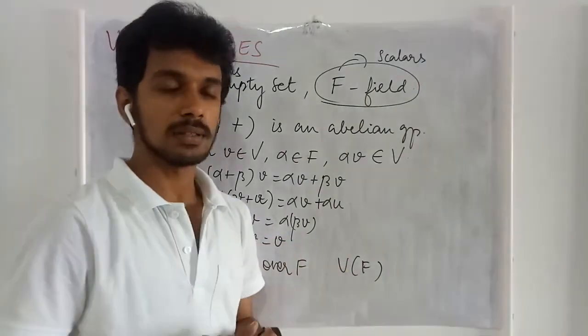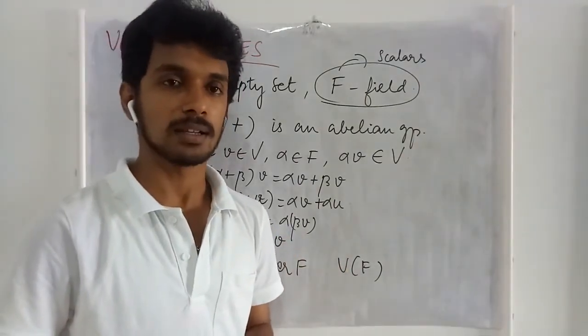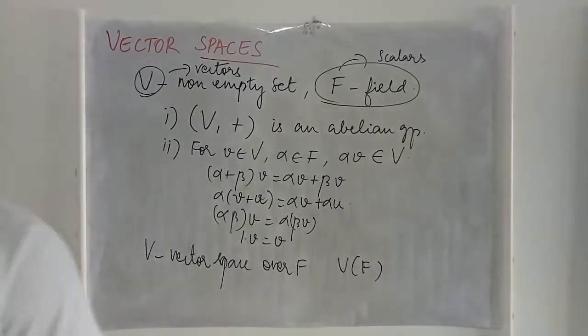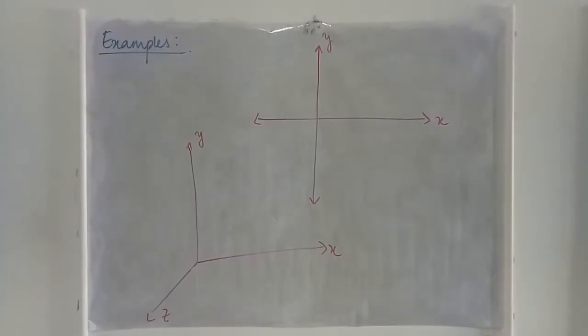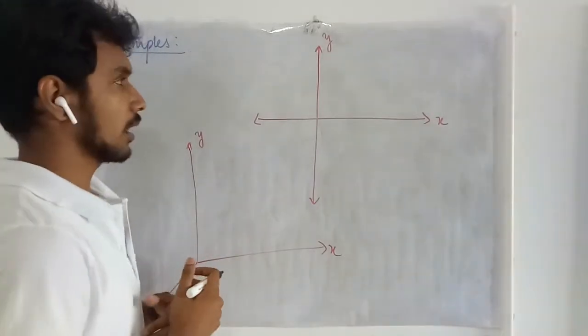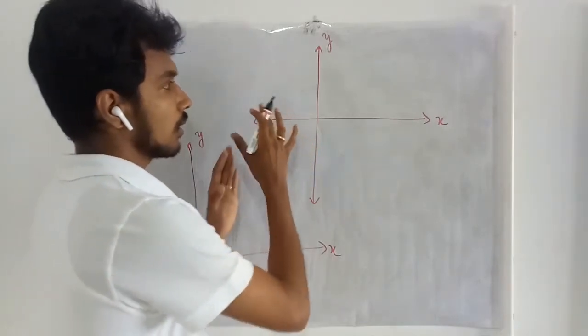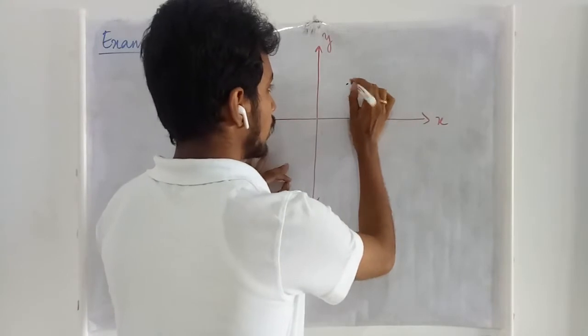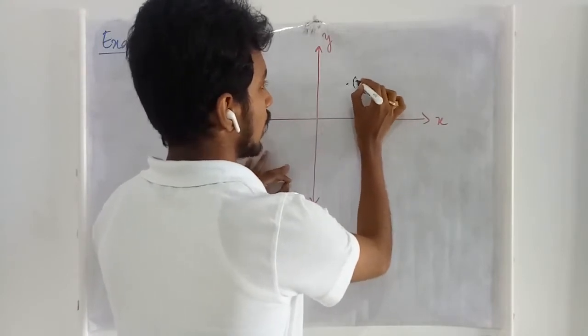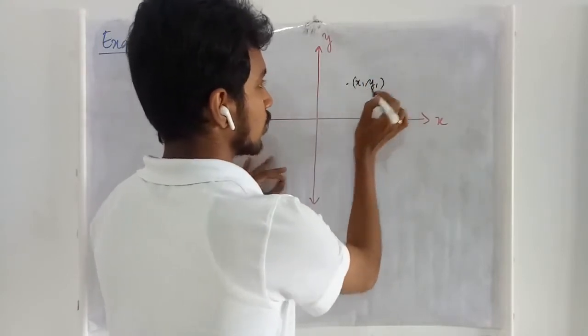Continuation to this we will see few examples on vector spaces and not vector spaces. These are all some primary examples that we have encountered during our school days and even in our graduation as well. Now let us see what is happening here. If you take a point over here it can be any point x1, y1.